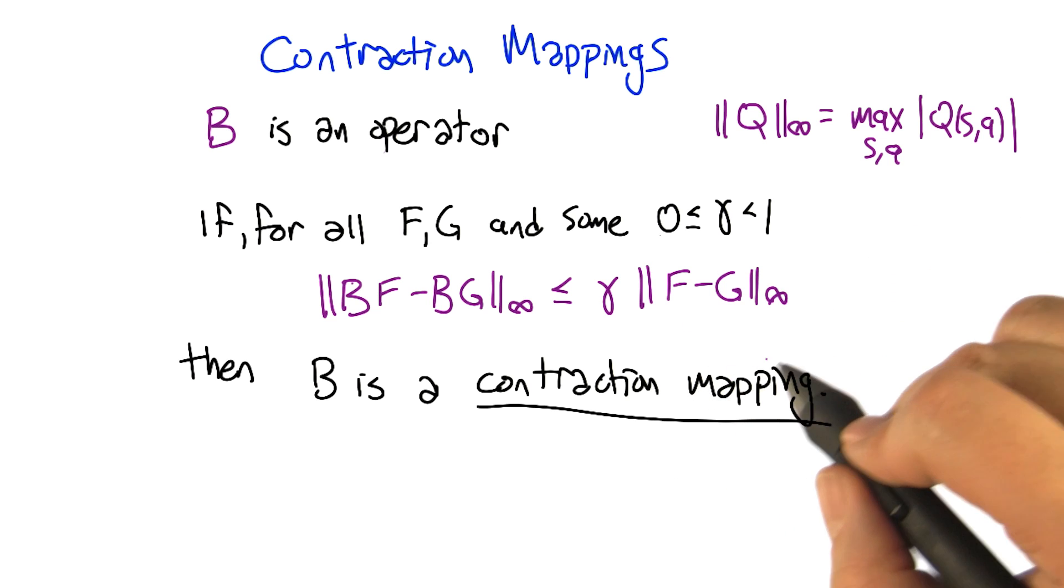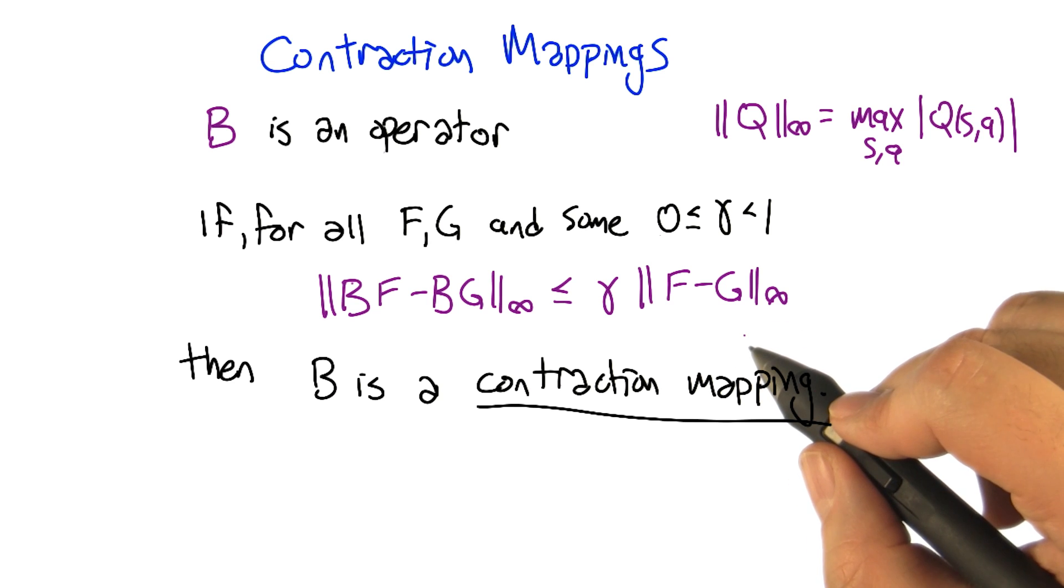So this is how we're going to define a contraction mapping. And this is going to give us all sorts of nice properties, and it's also going to happen a lot in the kinds of operators we get in reinforcement learning.